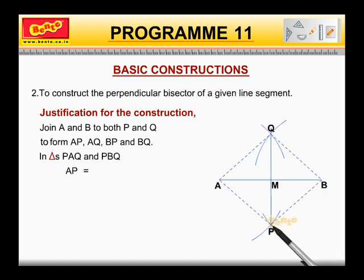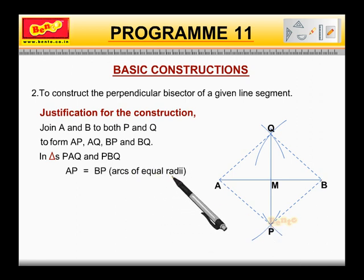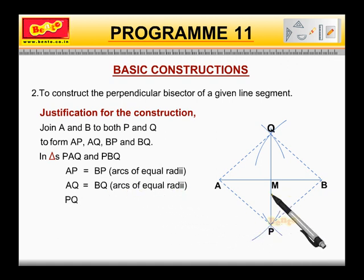AP is equal to BP. That is, arcs of equal radii. AQ is equal to BQ. Again, arcs of equal radii. PQ is equal to PQ. That is, common.